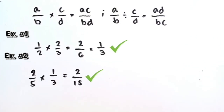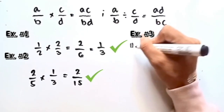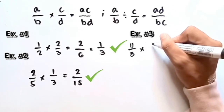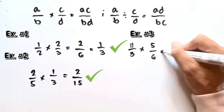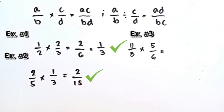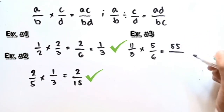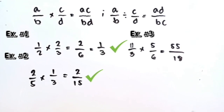Let's proceed to the third example. If we're going to multiply 11 over 3 times 5 over 6, so this is equal to 11 times 5 is 55, and 3 times 6 is 18. So 11 over 3 times 5 over 6 is equal to 55 over 18.